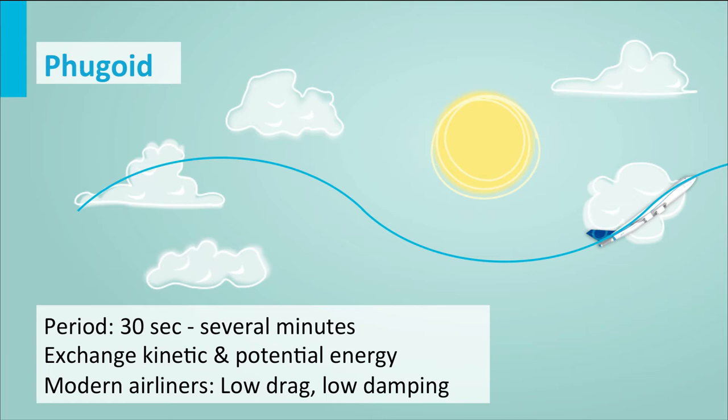The fugoid is not damped very much, and the period is about 30 seconds, so it is really noticeable. One way you can notice it as a passenger is to look at the shadow of your front seat when the sun shines through your window — you can use this as an attitude indicator and really see this movement. Some airliners have experienced this worse than others, so try to see it the next time you are in the passenger seat.